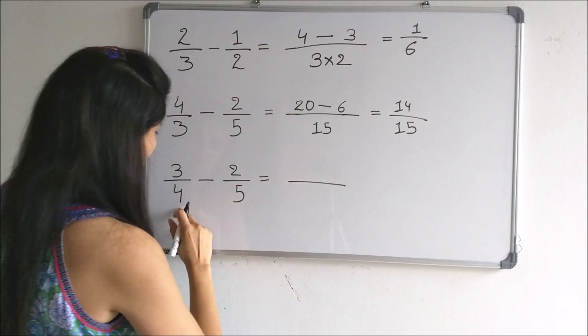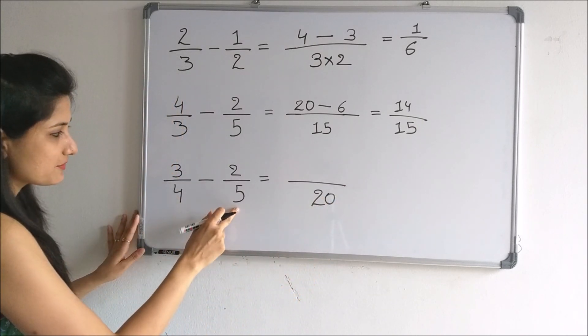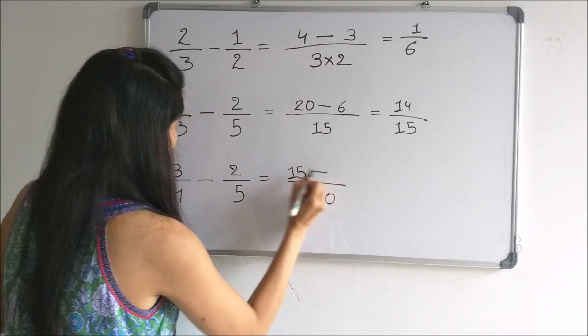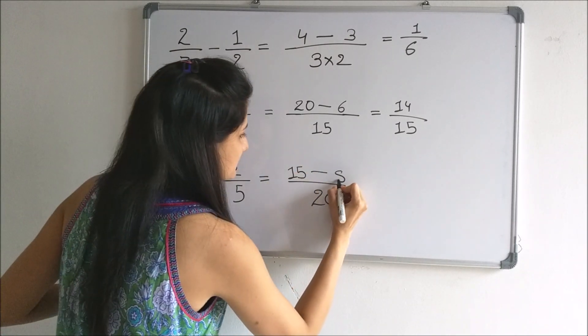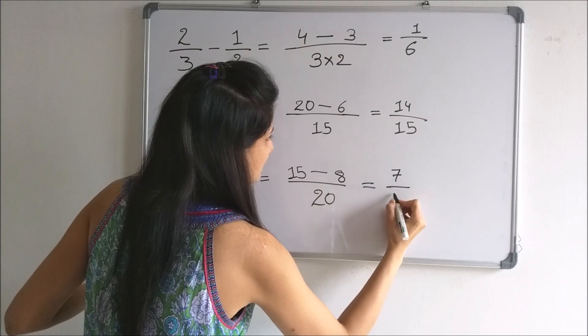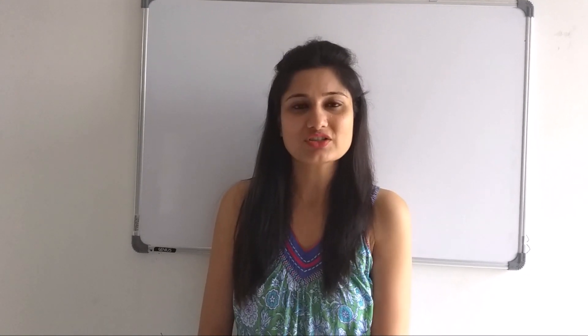Here also, we multiply the denominators to get 20, then do the cross multiplication: 3 times 5 is 15 minus 4 times 2 is 8, giving us 7 by 20. There is one more way of adding and subtracting two fractions, which is known as the highest common factor method. If there is any confusion in the method I have explained here, kindly mention it in the comment section. Thank you.